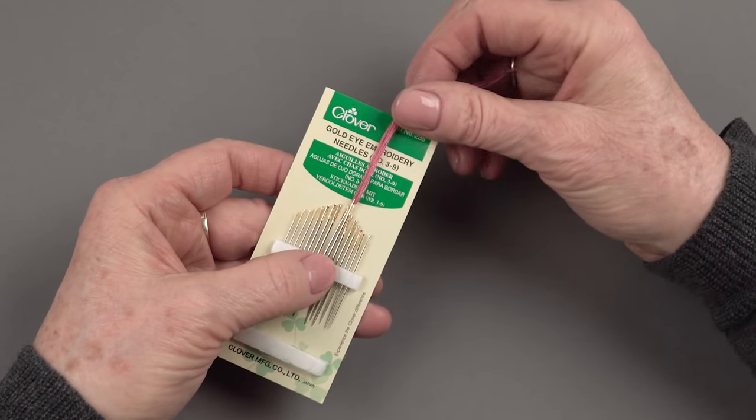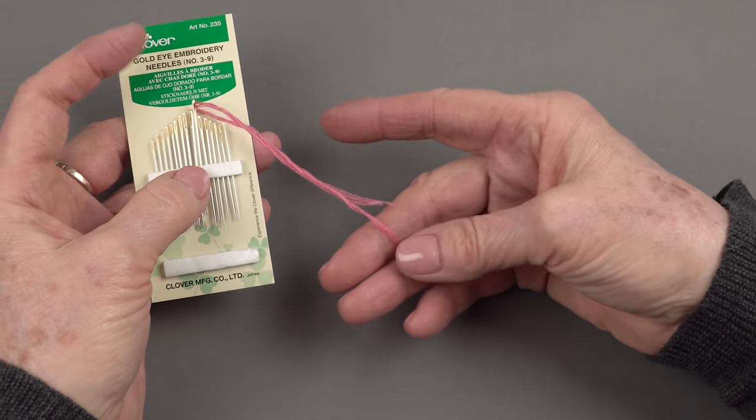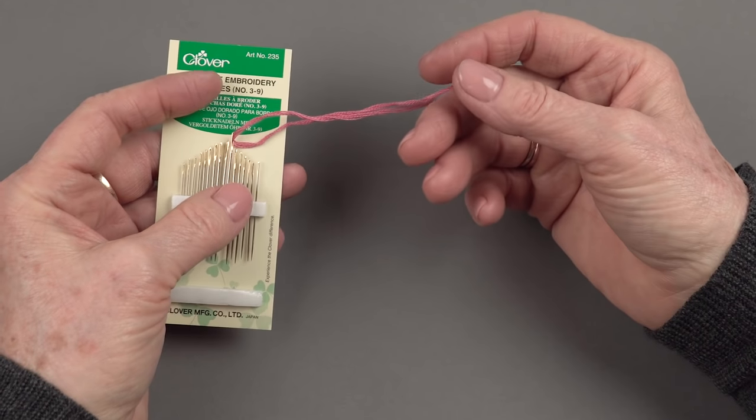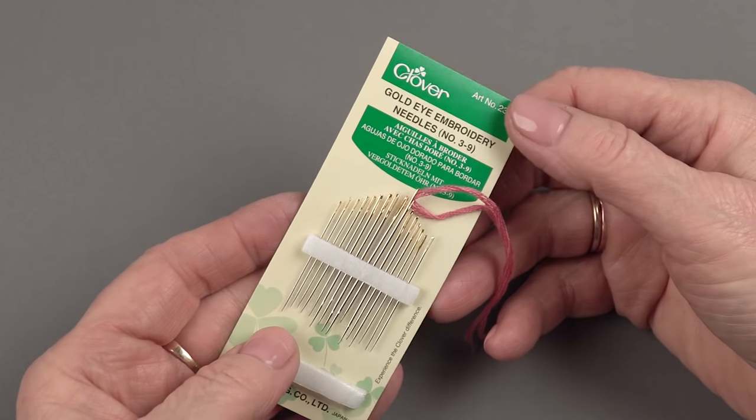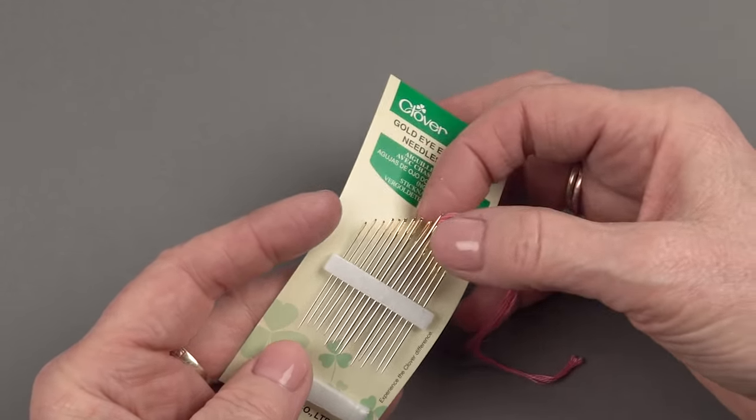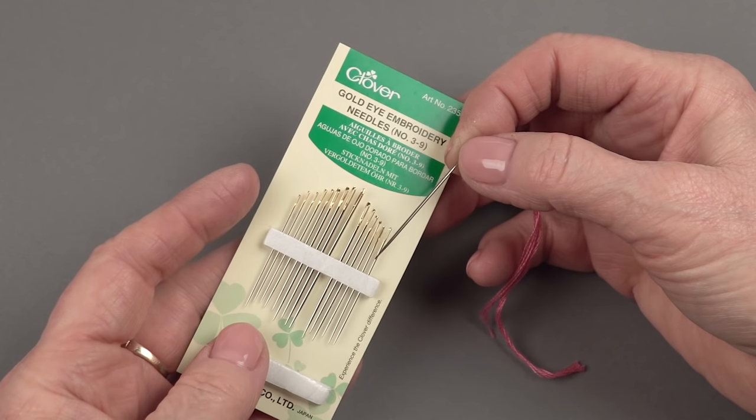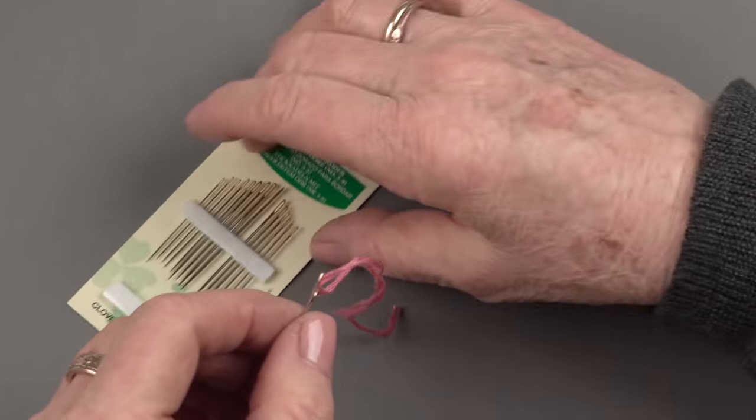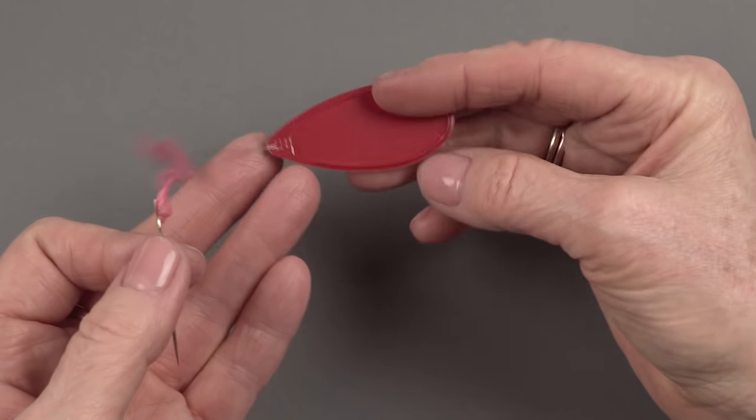On this big needle here I have six strands run through it and it worked really well. In order to easily thread a needle of this size or any size, if you're using more than one strand, it really helps to have a needle threader and that's what this is.